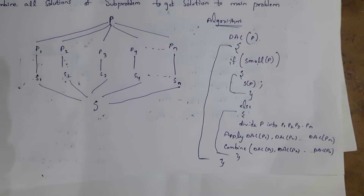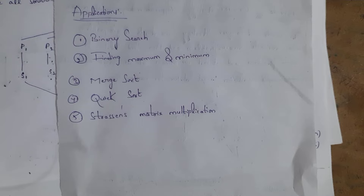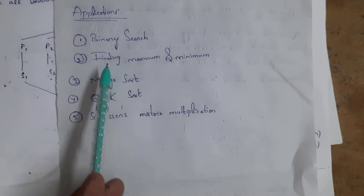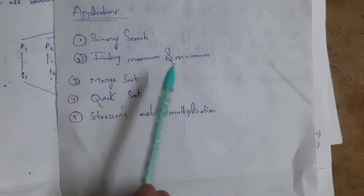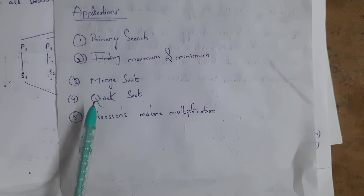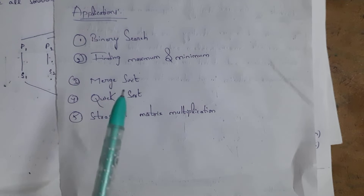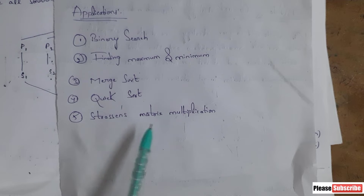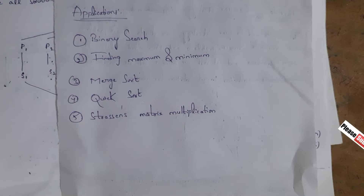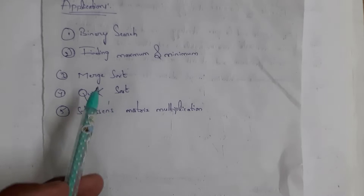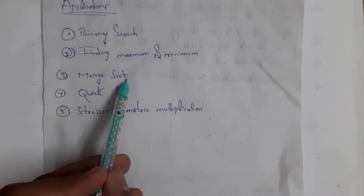All these are the applications of divide and conquer strategy: first is binary search, second is finding maximum and minimum, third is merge sort, fourth is quick sort, and fifth is Strassen's matrix multiplication. Now I will explain what is merge sort.